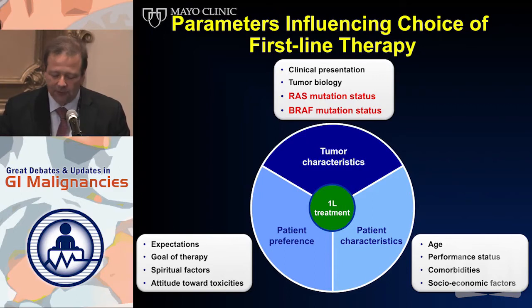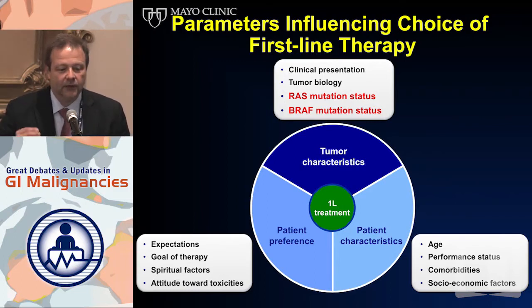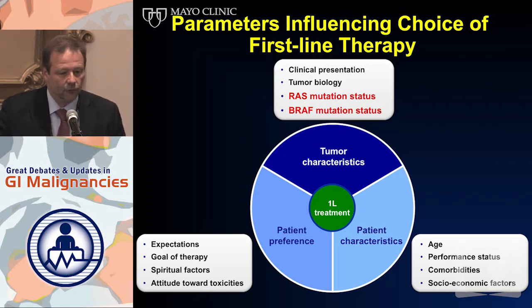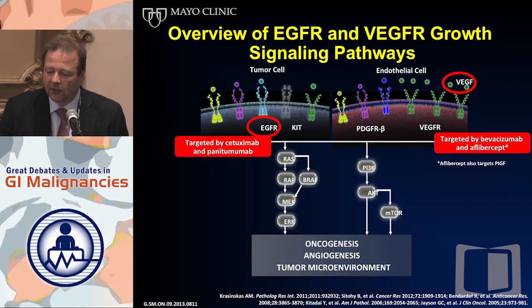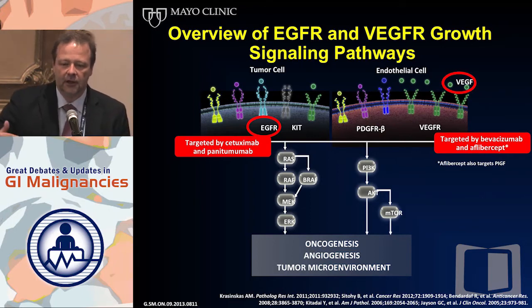I'll take the FIRE-3 approach, meaning using cetuximab in first-line therapy. When we talk about treatment decisions we make for our patients in first-line therapy, we look at various different characteristics. We've learned we need to test for certain mutational parameters — RAS and BRAF mutations can really influence our treatment decision. Having a biomarker available that can guide your treatment decision is the holy grail of what we're trying to do.